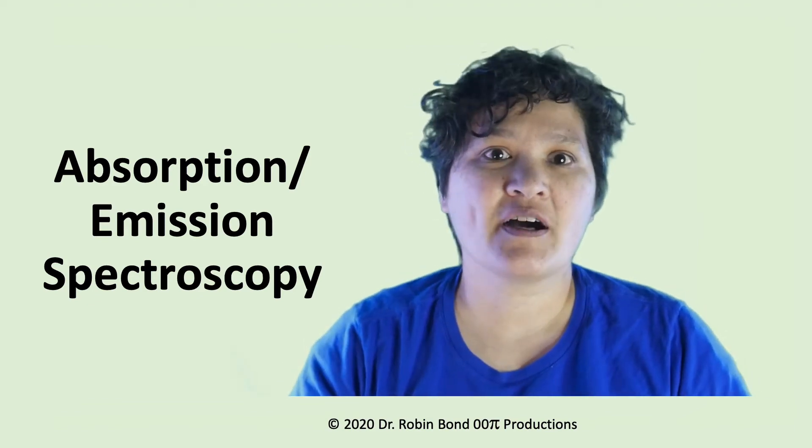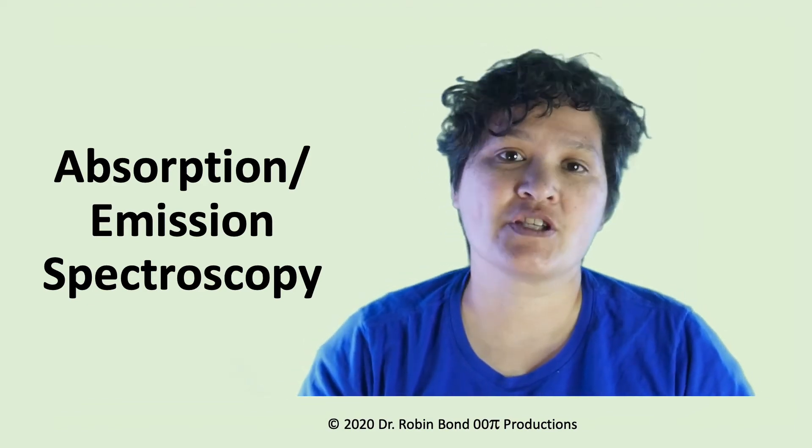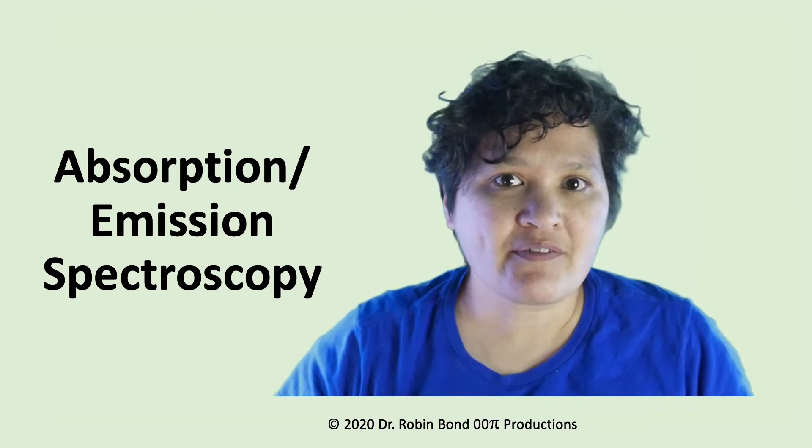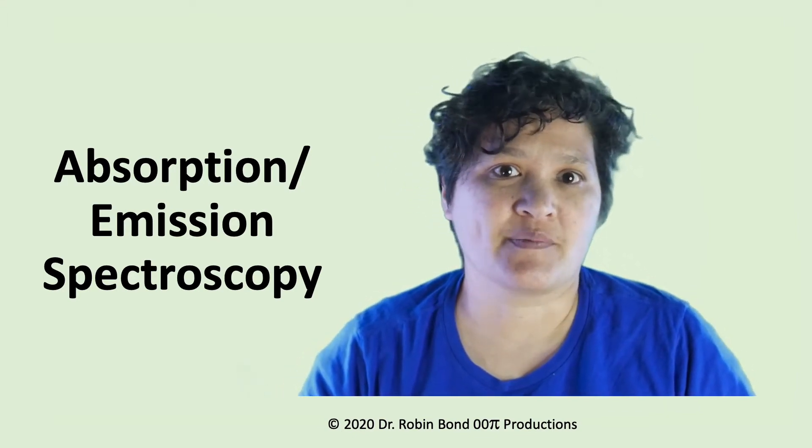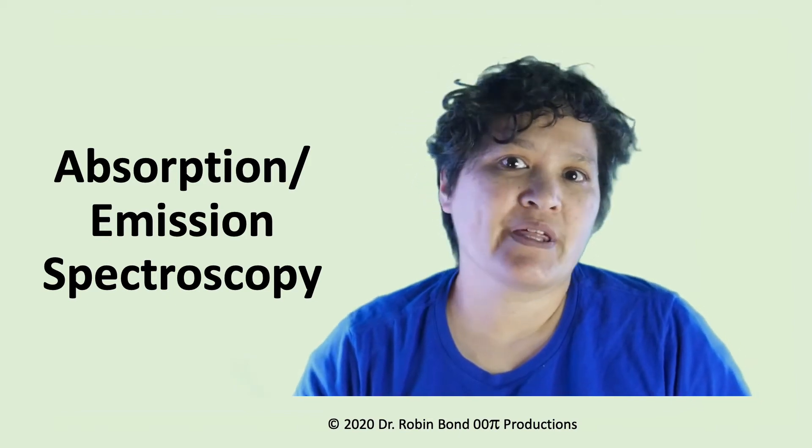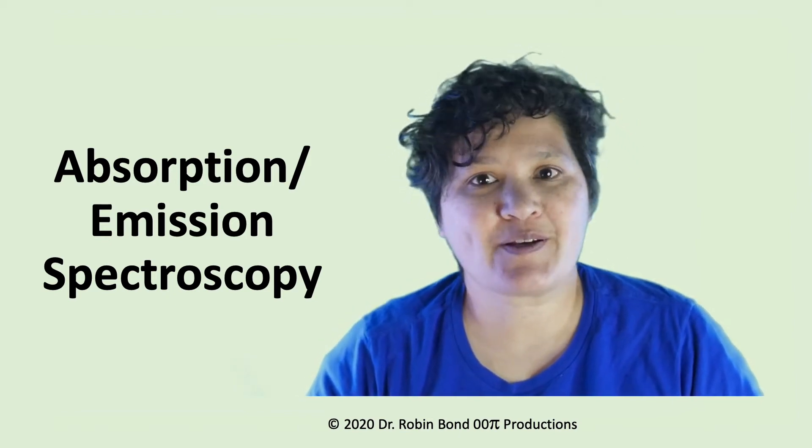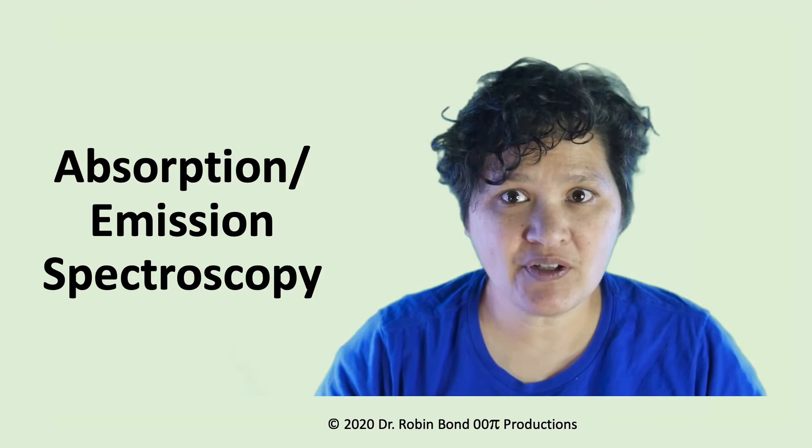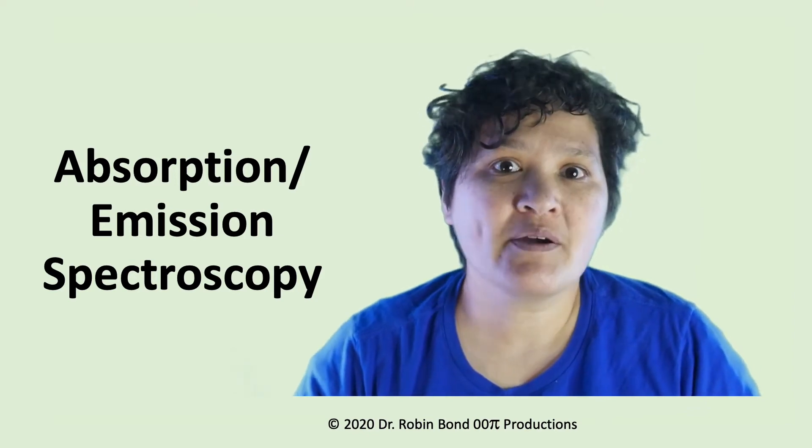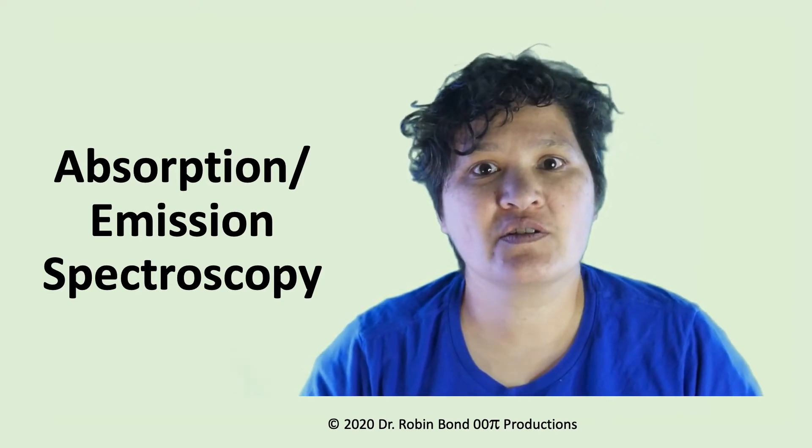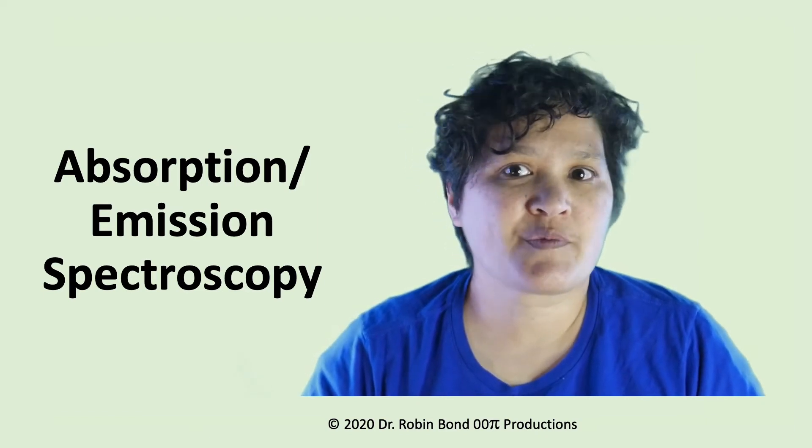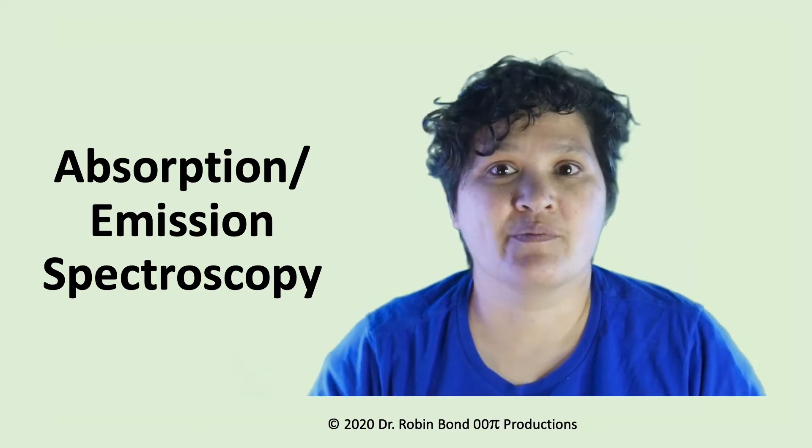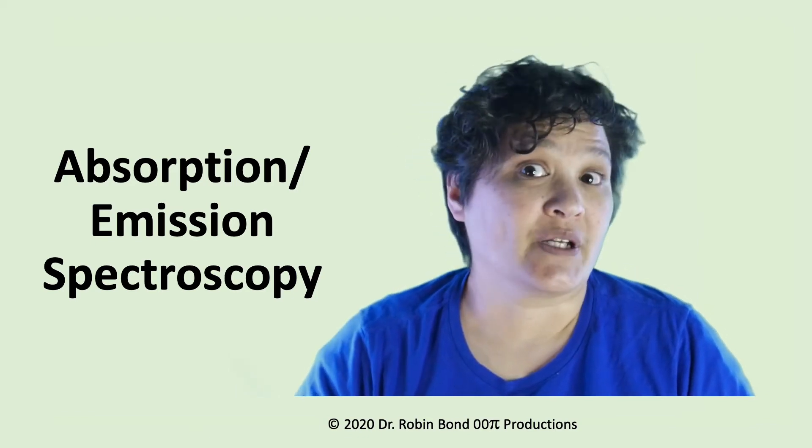Hi. Today we're going to talk about absorption and emission spectroscopy. We're going to cover a wide range of topics relating to various sorts of spectroscopy, and we're going to start with how absorption and emission spectroscopy work on a chemical level, then talk about why we can measure concentrations using spectroscopy, and finally discuss one sort of absorption and one sort of emission spectroscopic instrument.